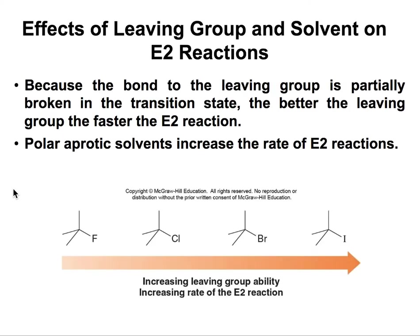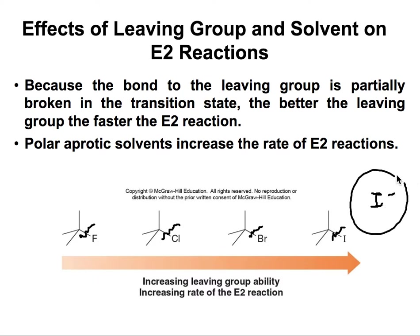How does the leaving group affect elimination reactions? This C-X bond is the one that has to break, so the better the leaving group, the faster the reaction will happen. The larger the halogen, the more ready it is to leave because it can stabilize the negative charge. Iodine minus is very large and can stabilize electrons very well, whereas fluorine minus is very small and cannot stabilize those electrons as well.